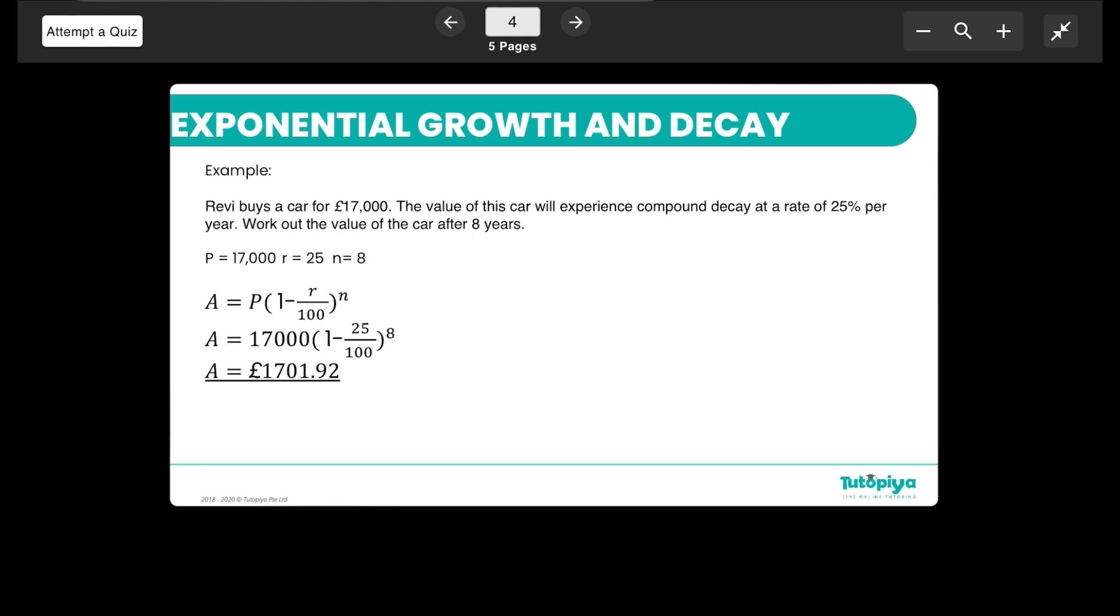Work out the value of the car after 8 years. We basically list down the information here: P is 17,000, then we have r which is 25%, and we have n which is 8 years. We just put everything into the formula: A equals P open bracket 1 minus 25 over 100 to the power of 8, using the formula we have for decay. Finally we can work out the answer.